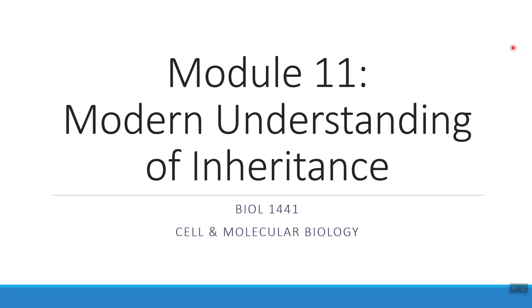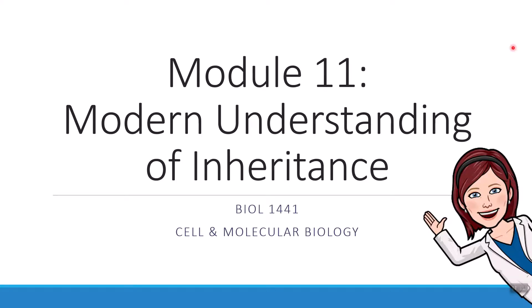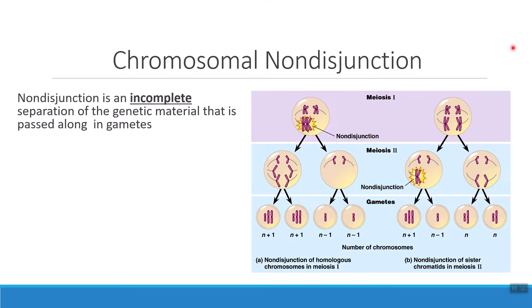Hi everybody, Dr. Aulis here. In this short video we're going to talk about some of the ways that genetic information can be inherited incorrectly from parents to offspring. So first let's start with something that's called non-disjunction.